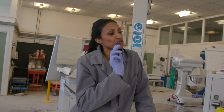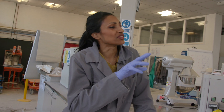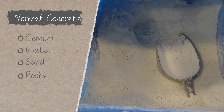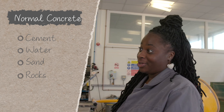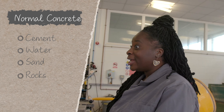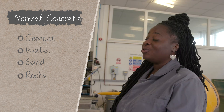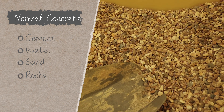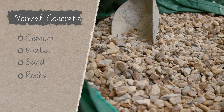Take me through the ingredients of what is in normal concrete. So normal concrete has cement, water, and fine and coarse aggregates. A fine aggregate would be like sand, and your coarse aggregates will be like gravels and rocks — rocks that you find normally.